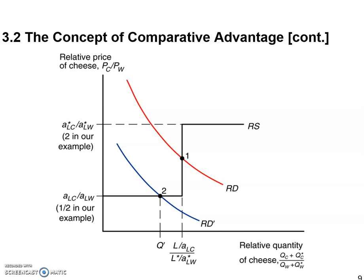Remember, we said before that they produce two products: cheese and wine. To understand the magic here, we have to understand the elements on this graph. RDRS analysis is just an advanced version of supply and demand analysis. In introductory and intermediate level courses, we already learned that demand and supply analysis gives us a downward sloping demand curve, an upward sloping supply curve, and then we find the intersection between these two, which gives us the equilibrium on the market.